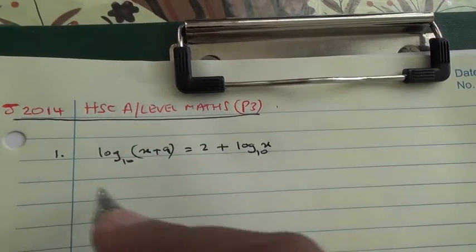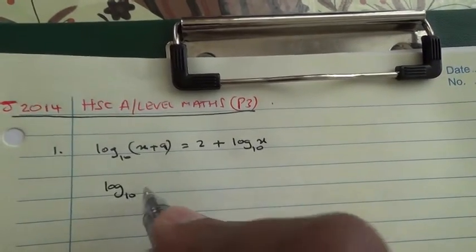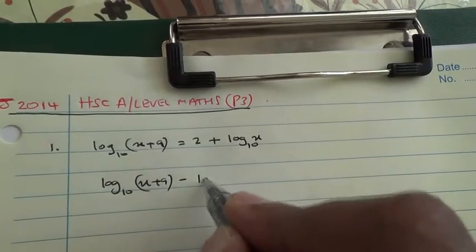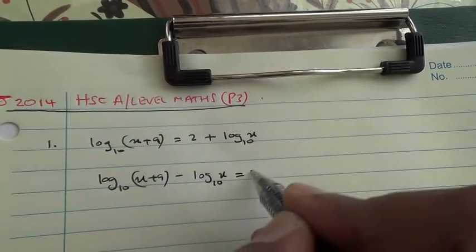This can come on this side. Therefore, we have log₁₀(x+9) - log₁₀x = 2.